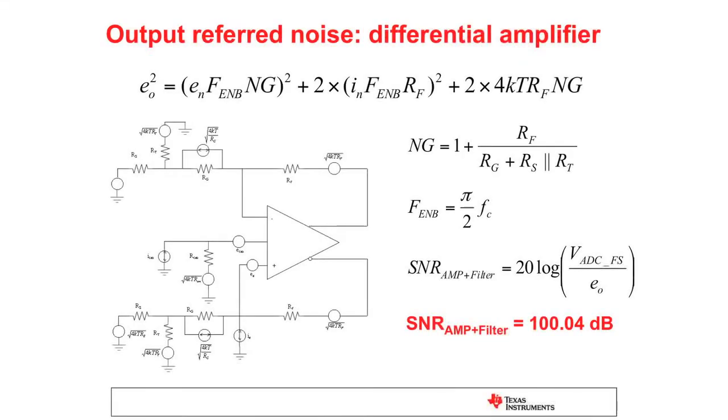You can see that I've modeled a fully differential amplifier and its noise sources, and you can run through the equations and add in your filter, which for a single RC pole is pi over 2 times your cutoff frequency, which gives you 100.04.